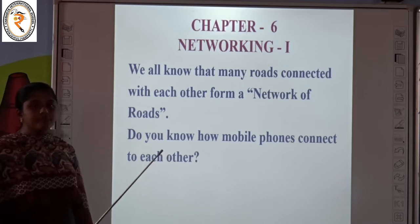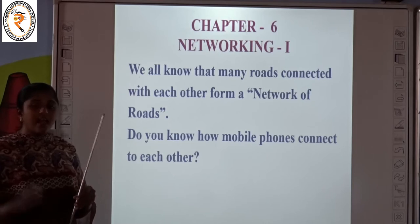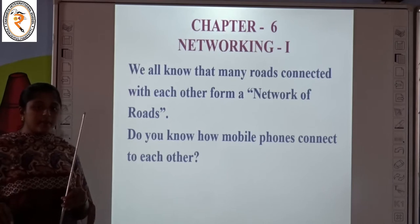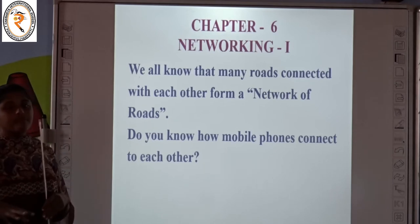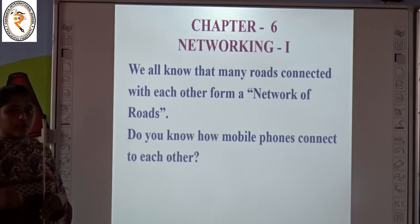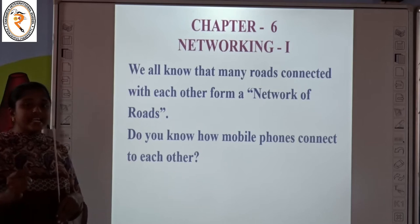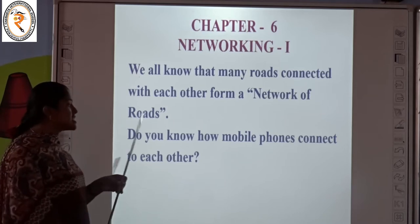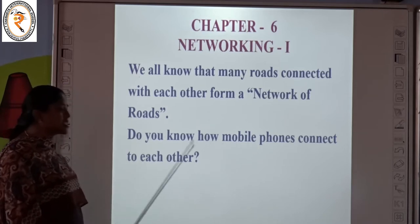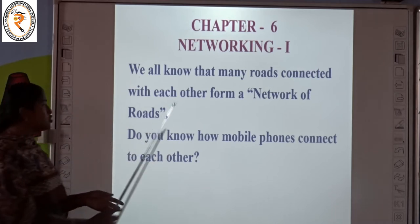They are connected using towers. So the cell phone signal will be passed from one signal to another. Then one will be able to connect the call. So your mobile phone is connected to the nearest tower. Then it will pass the data to another tower, which is near to your friend or your father or mother. This is the way how mobile phones get connected to each other, so they are able to communicate using mobile phones.